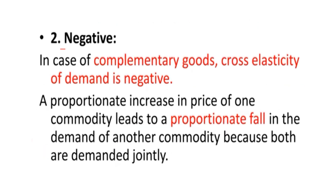The second degree is negative cross elasticity: in the case of complementary goods, cross elasticity of demand is negative. A proportionate increase in the price of one commodity leads to a proportionate fall in the demand of the other commodity, because both are demanded jointly. If the price of one complementary product increases, we avoid that product and don't buy either.